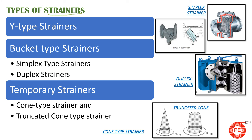Strainers are basically of three types. The first is the Y-type strainer, one of the most common strainers you would see near pumps. It forms a horizontal Y shape, with a filter placed inside. Flow moves through one side, passes through the filter, and exits from the outlet. The second is the bucket type strainer, which has two subtypes: simplex and duplex strainers.